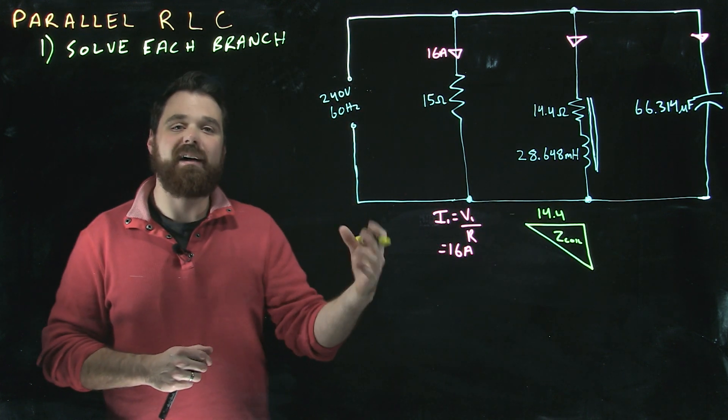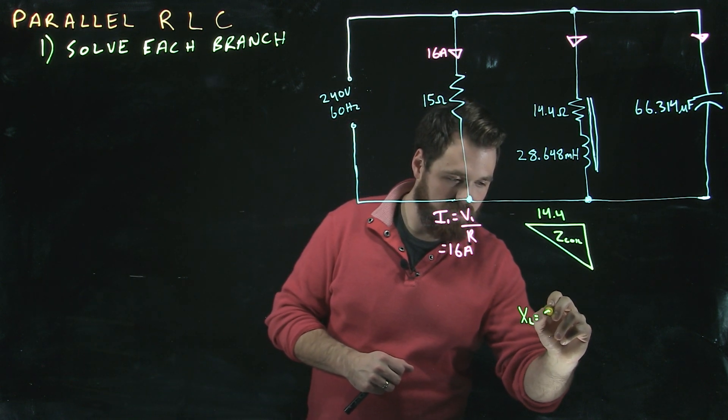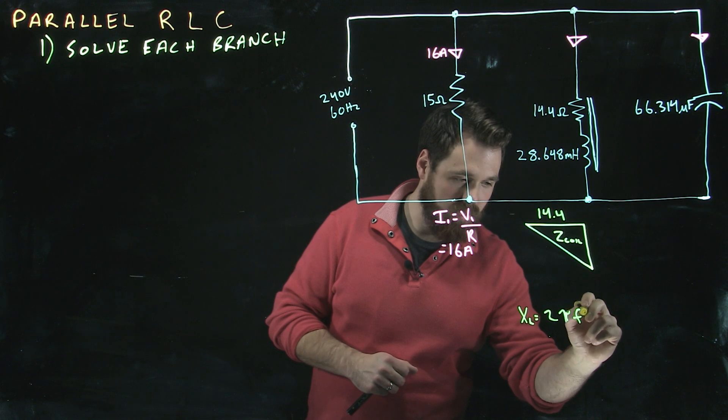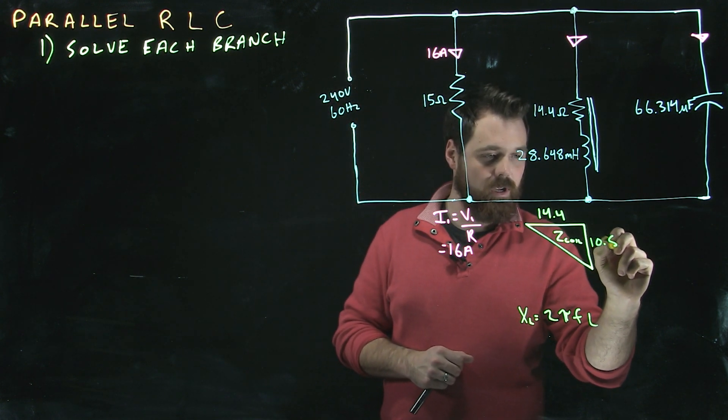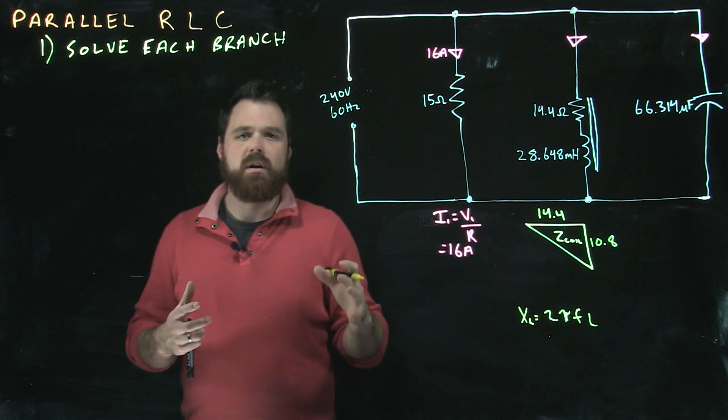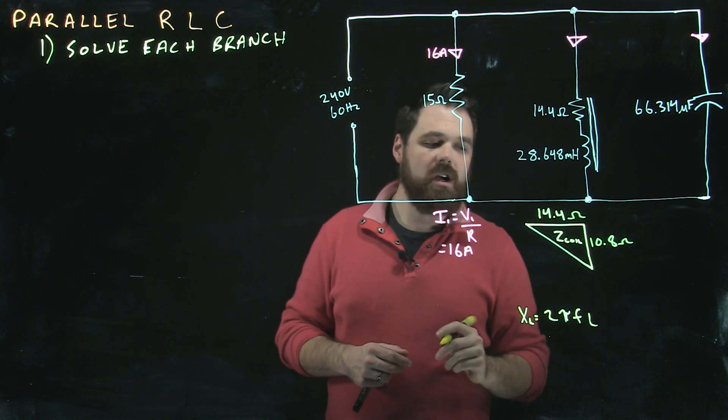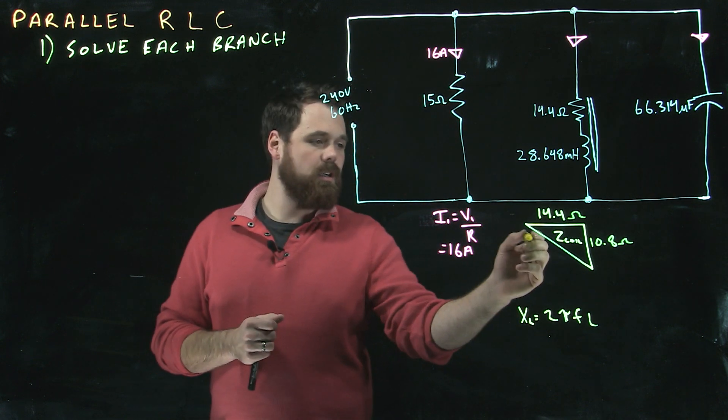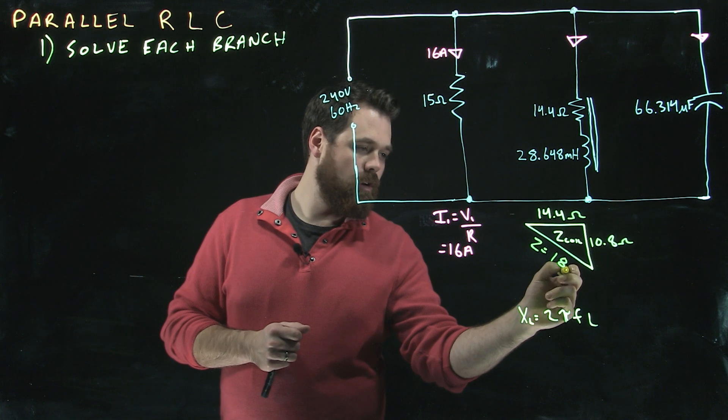And we have to figure out what our XL is. We can solve our XL by going XL equals 2πFL. In this case, we get 10.8 ohms. Once we have our resistance and our inductive reactance, we can figure out the Z of our coil. In this case, Z equals 18 ohms.